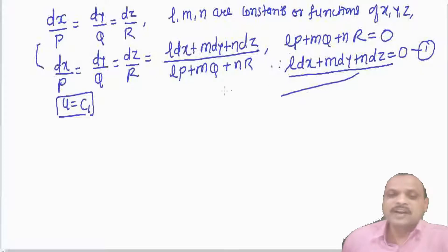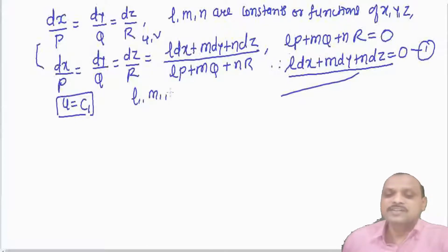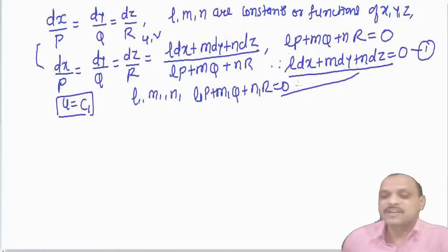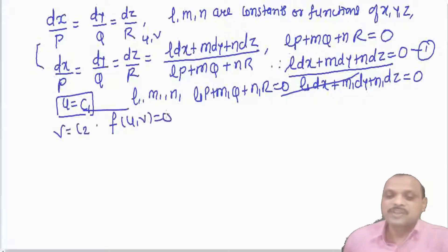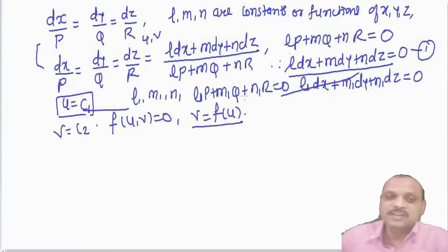Similarly, we need another pair since the solution contains u and v. We choose l₁, m₁, and n₁ such that l₁·P + m₁·Q + n₁·R = 0, giving l₁·dx + m₁·dy + n₁·dz = 0. This gives another relation v = c₂. Then f(u, v) = 0, or v = f(u), is the solution of the given differential equations. This is the method of multipliers.